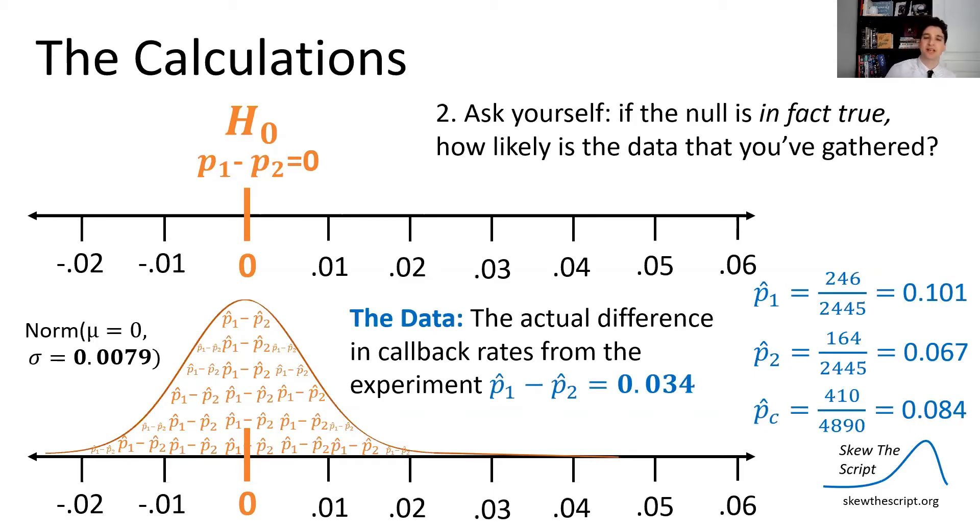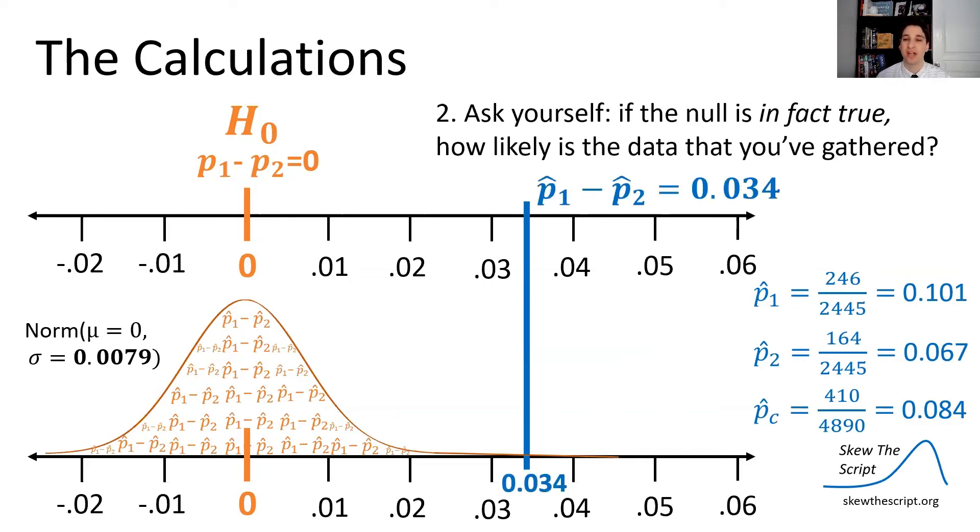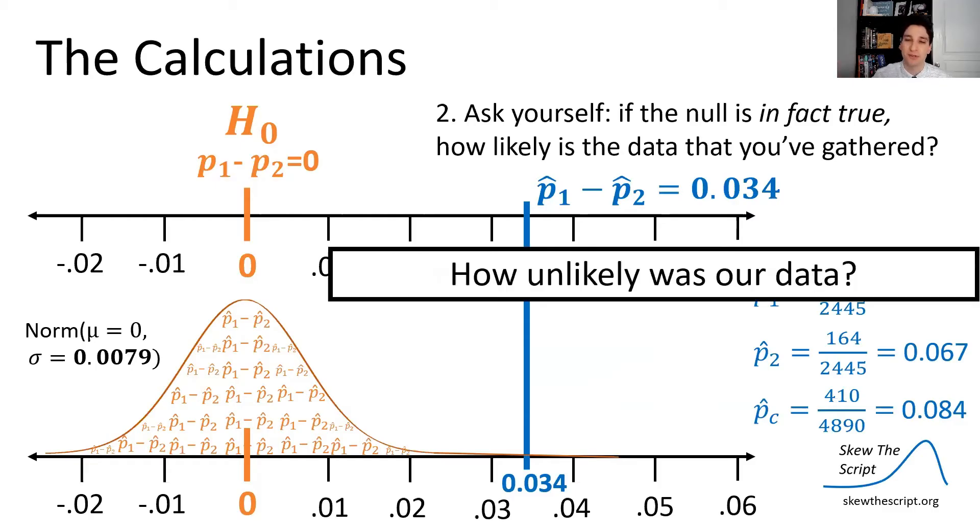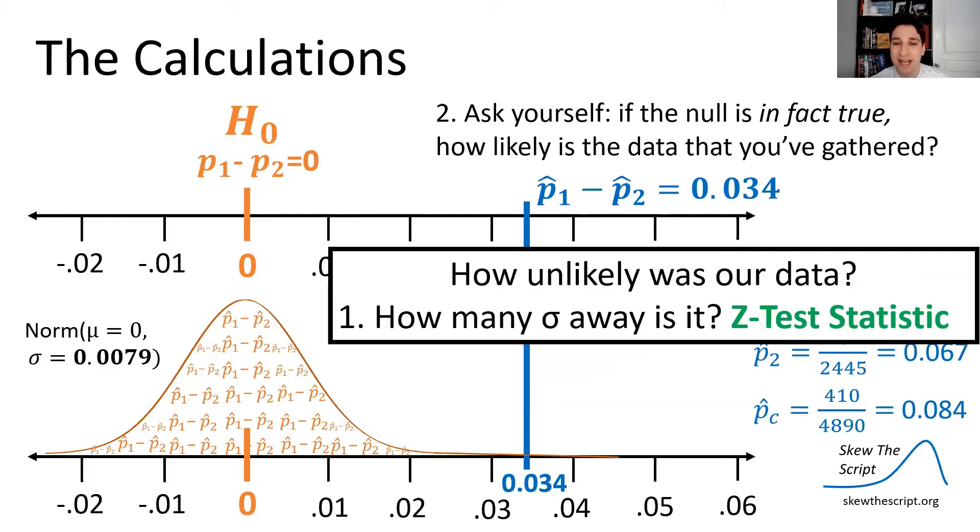So now let's look at the data we actually got from our experiment. This is the distribution of sample proportions we get under the null assumption. Now let's look at the data we actually saw from our experiment. The actual difference is 0.034. That's way over here. As you can see, it's pretty unusual. Like if our null assumption is true, and this is the distribution of sample proportions we likely get, this difference is high. It's very high compared to what we expect. So how unlikely was our data?